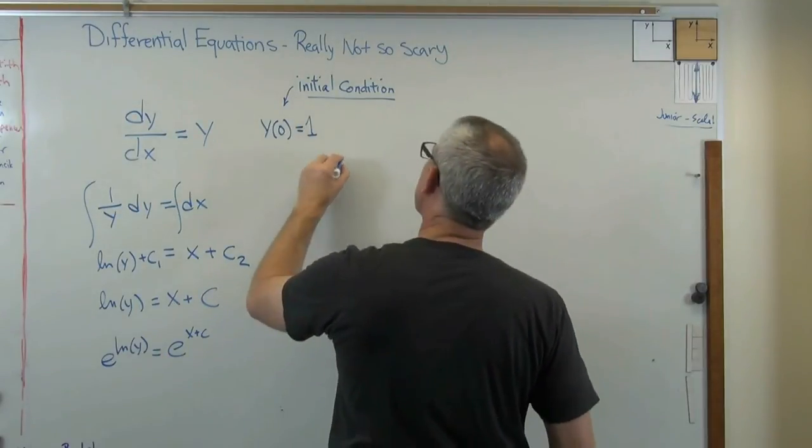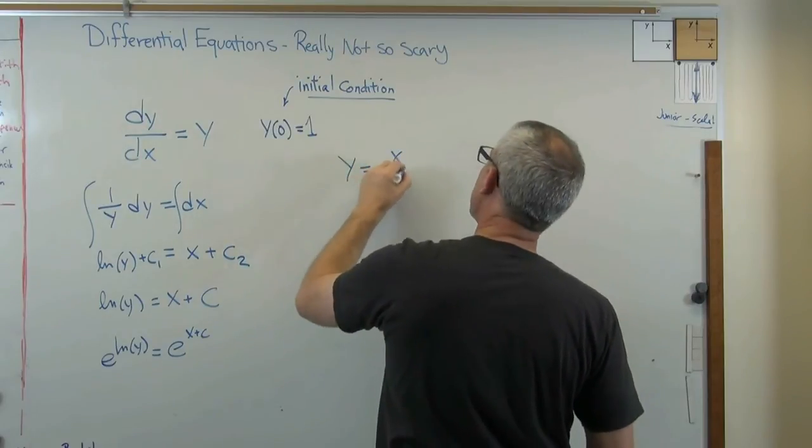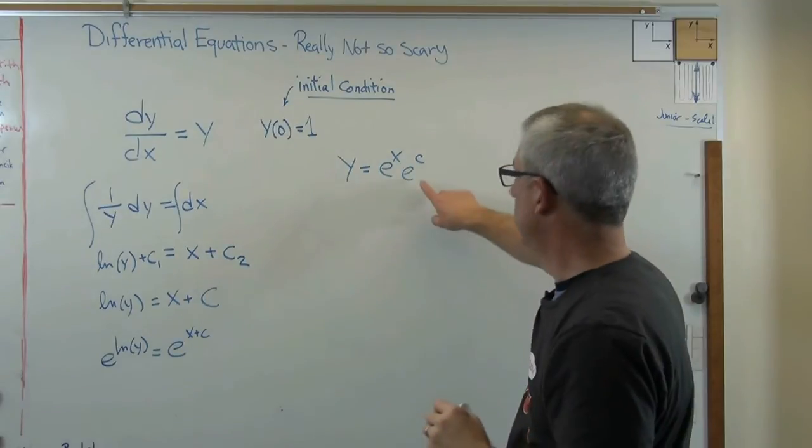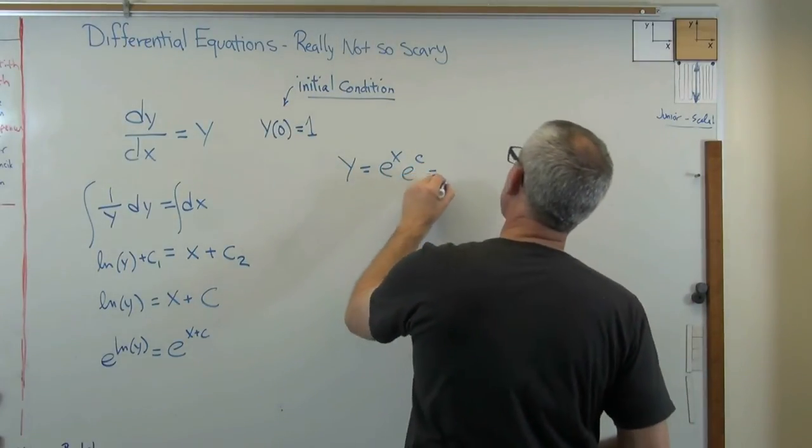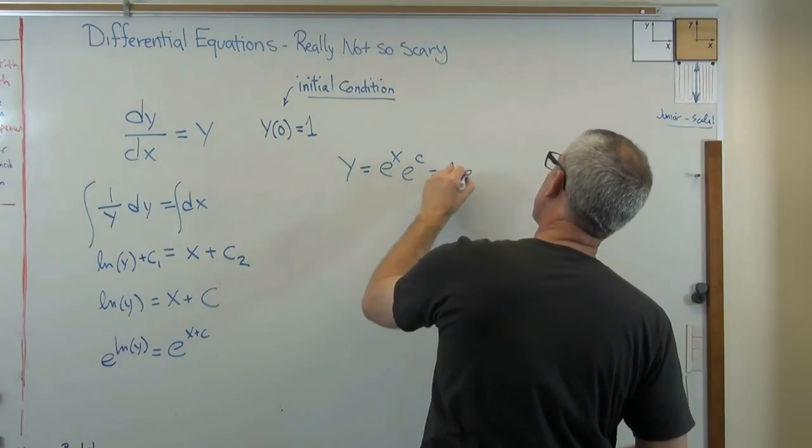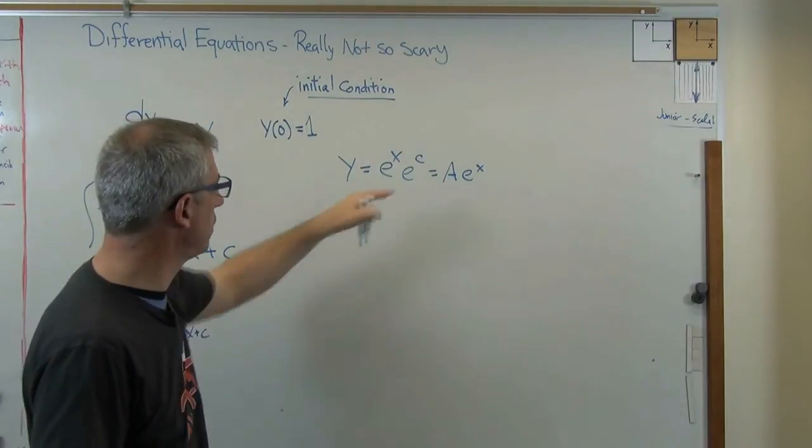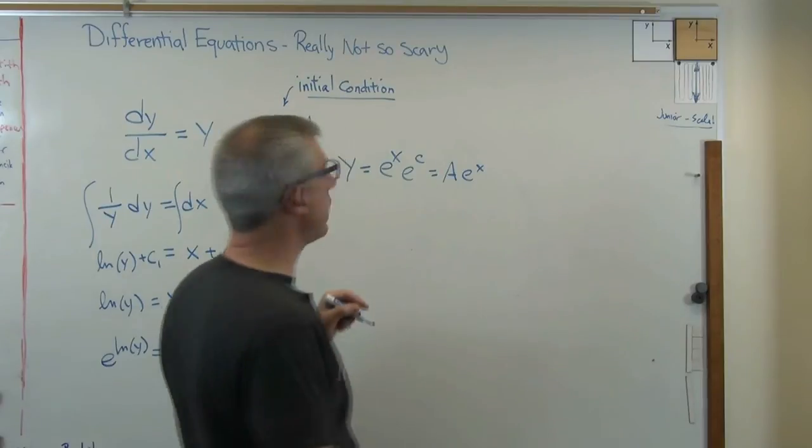Let's go back up here. Well, e to the natural log of y, that's just y. And e to the x plus c, that's e to the x times e to the c. This is another constant. Well, just to make this tidier, I'm going to replace e to the c with a. And I know it looks like I'm adding more and more and more constants here, but I can backtrack through the chain if I need to. So I've got y equals e to the ax.